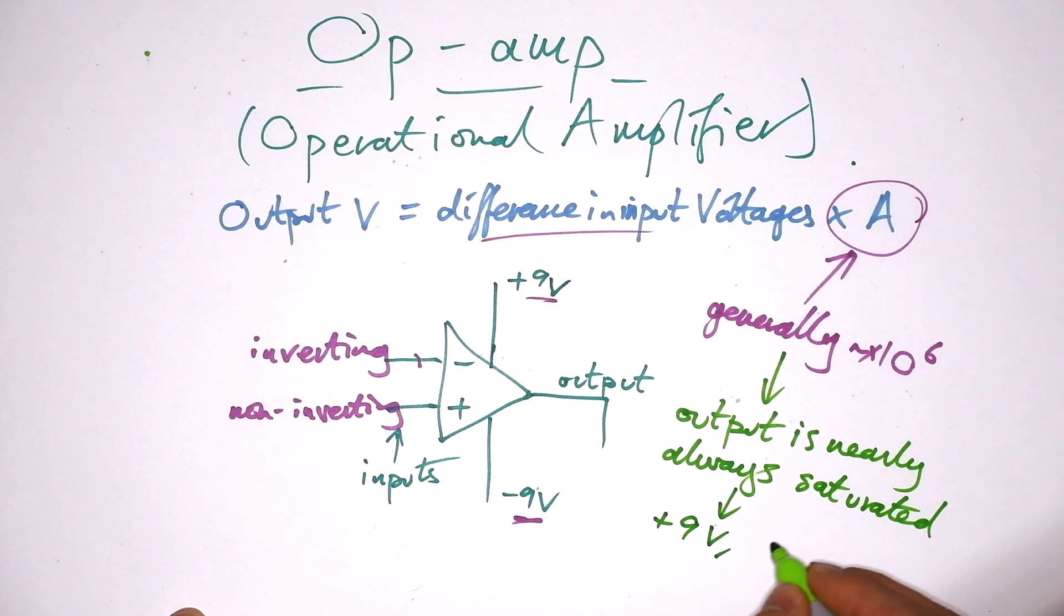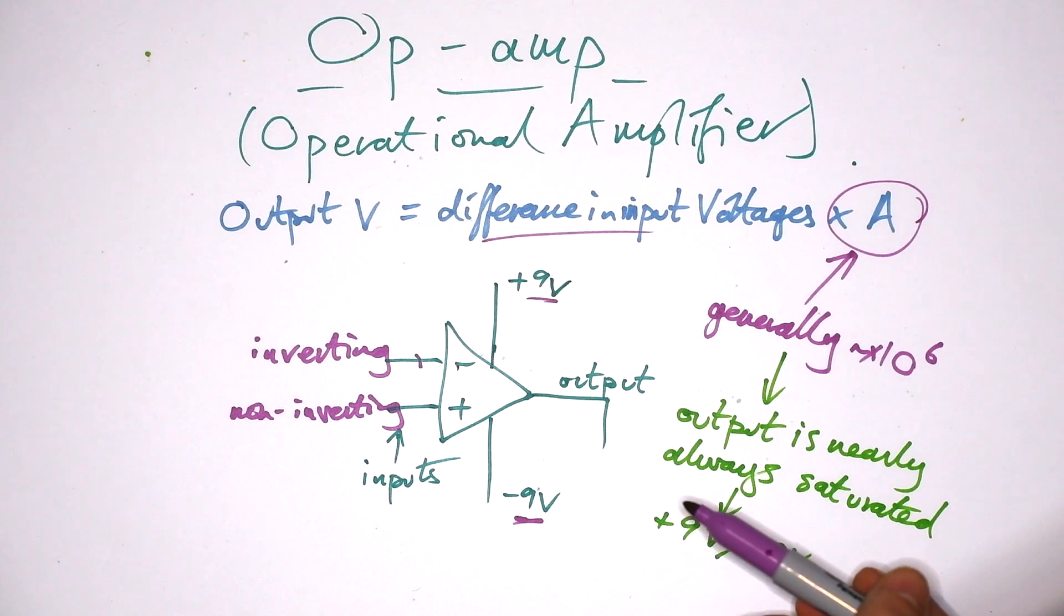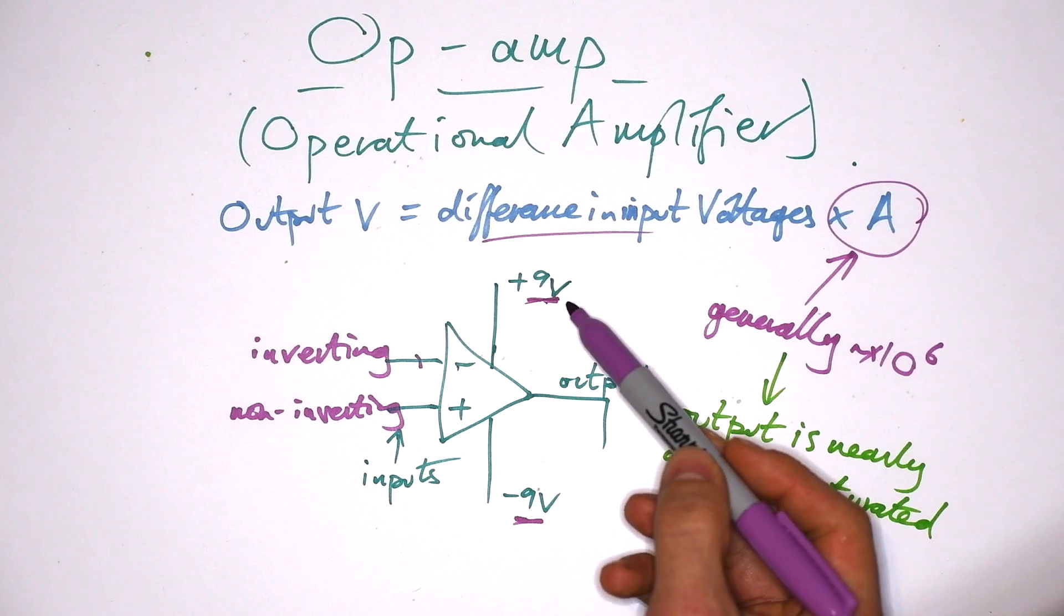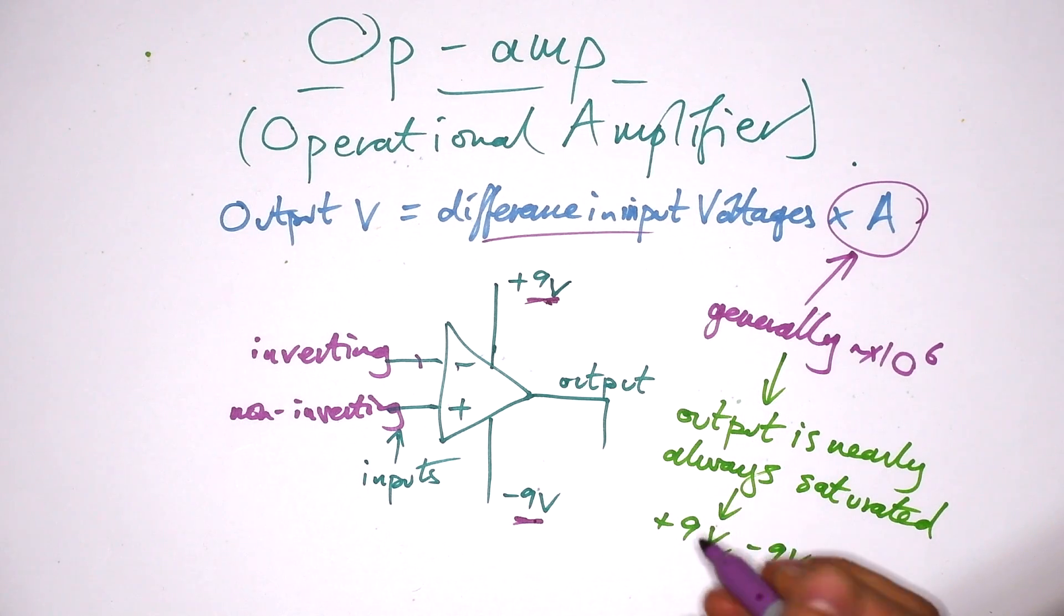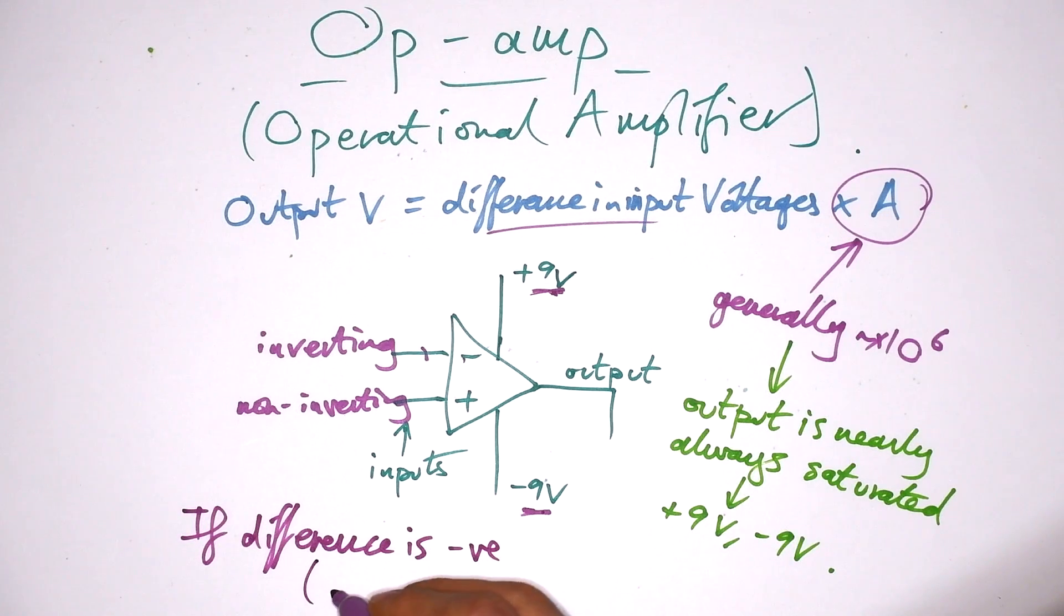So because the amplification factor is usually so big, that means that the output is nearly always saturated. So in this case, we'd either get plus 9 volts or minus 9 volts out of the output. In order to get anything in between plus 9 volts and minus 9 volts, we'd have to have such a small difference between these that it's very, very unlikely. So we assume that in every single case with an op amp, that we have an output that is saturated. So we can say that the output is definitely going to be this or this. So you probably figured this out, that if the difference is negative, and that's because the minus input, the inverting input, and you can maybe see why it's called the inverting input now, because it's swapping it from plus 9 to minus 9, minus input is greater than the positive input.